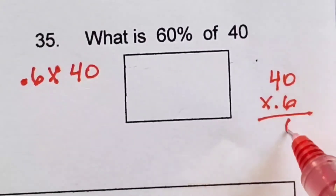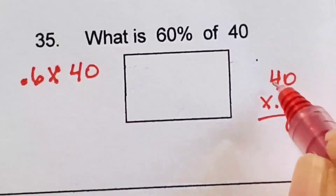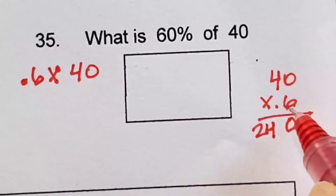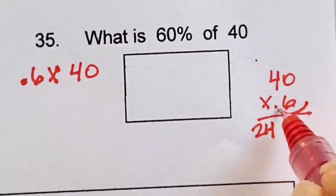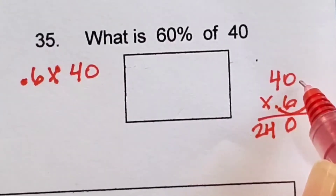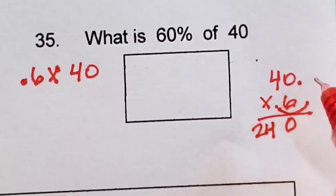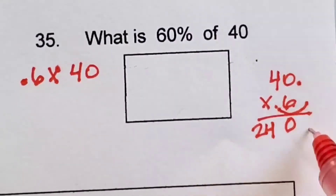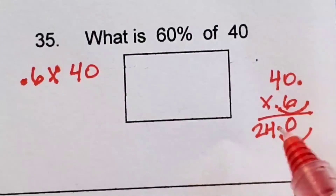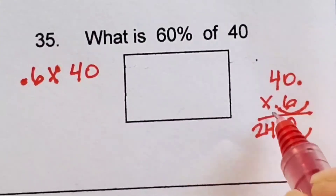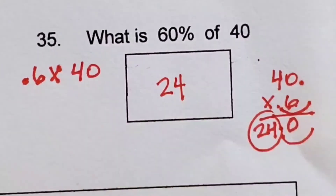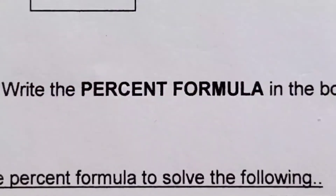6 times 0 is 0. 6 times 4 is 24. Count back to your decimal points — 1 decimal place, and the decimal point on the 40 is there, so you can't go back anymore. Your decimal point goes right after the 24. So 24 is your answer. 24 is 60% of 40.